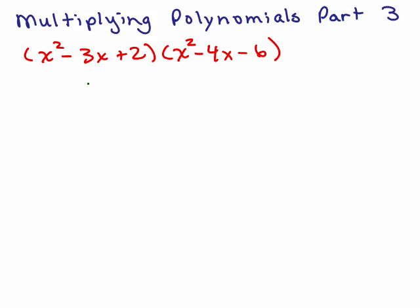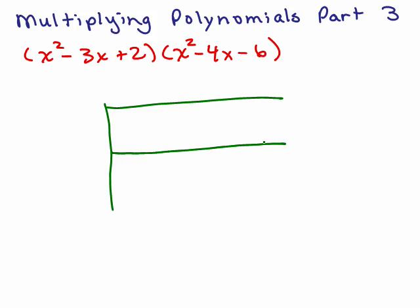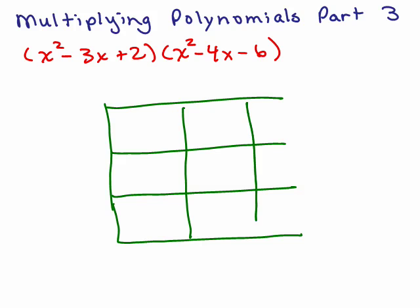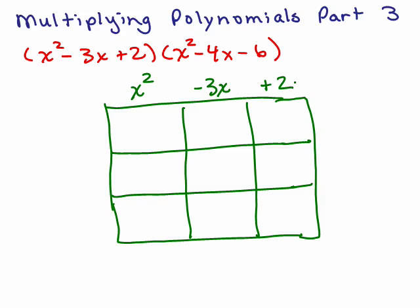We take a box, and what we're going to do is multiply every term in the first parentheses times every term in the second parentheses. We make a box that's 3×3, because this happens to have 3 terms in the first parentheses and 3 terms in the second. We take the first polynomial and write each term across the top of a column — x squared minus 3x plus 2 — and the second polynomial along the right-hand side — x squared minus 4x and minus 6.